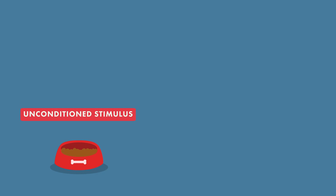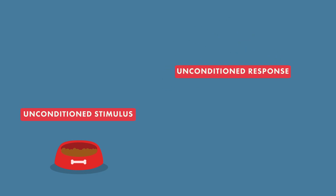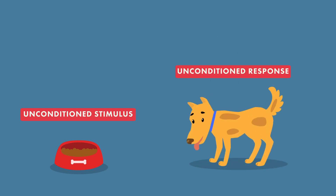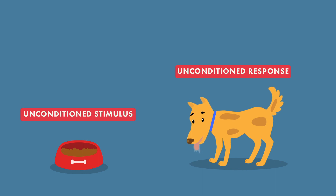For classical conditioning, we need to start with an unconditioned stimulus that causes a natural bodily response. In this case, the unconditioned stimulus is the food. Then we need an unconditioned response. In this case, the unconditioned response is the salivation in the dog. The dogs have a natural unconditioned response — salivating — when they eat the unconditioned stimulus, food.